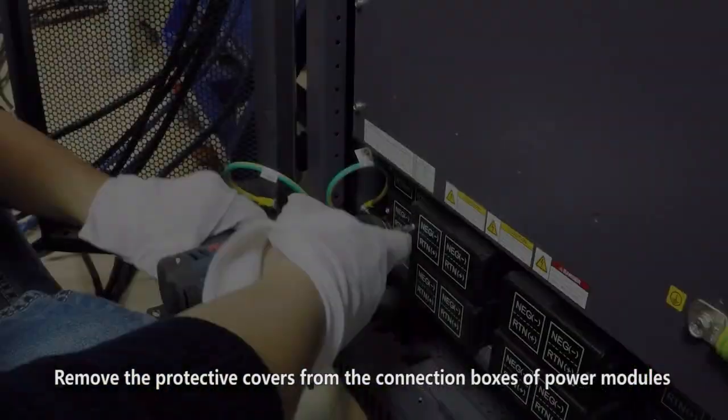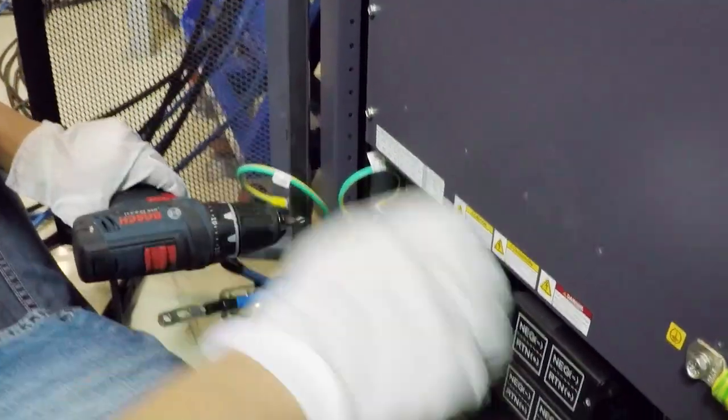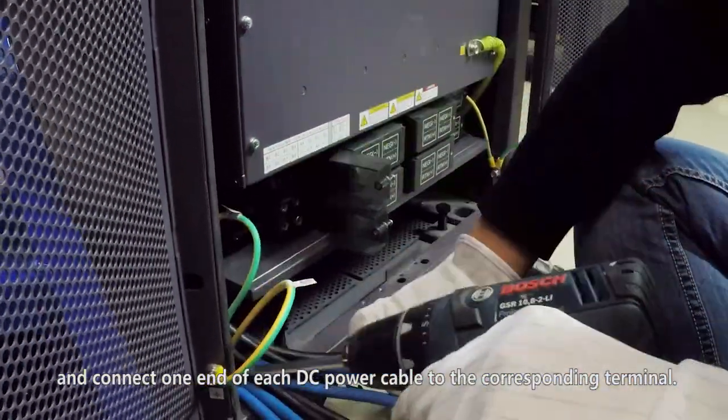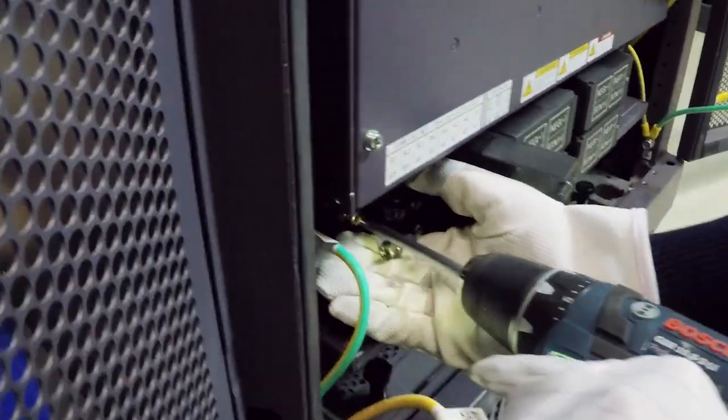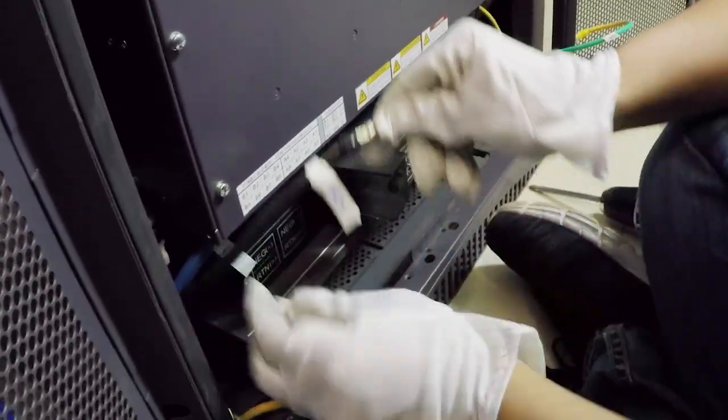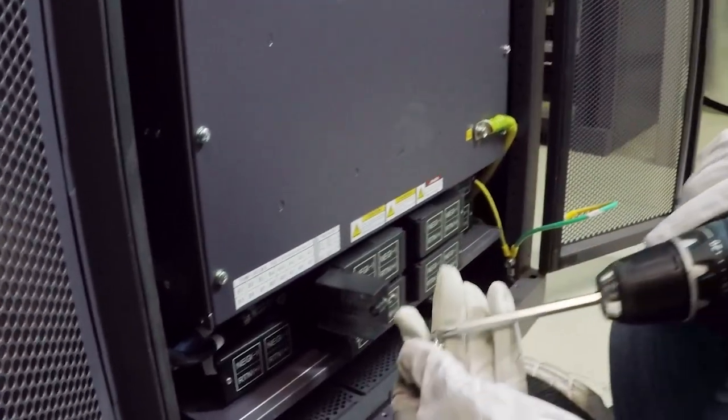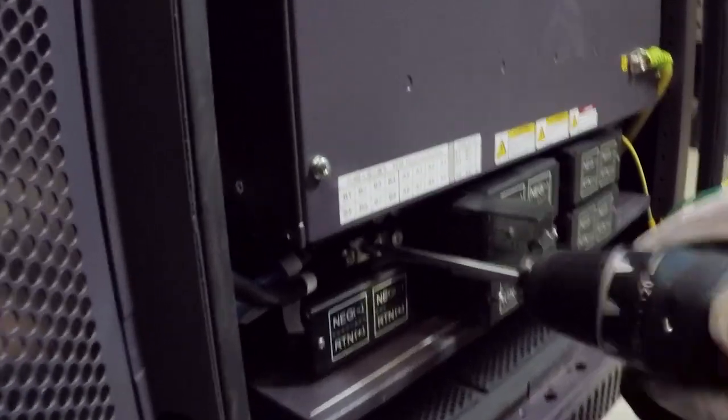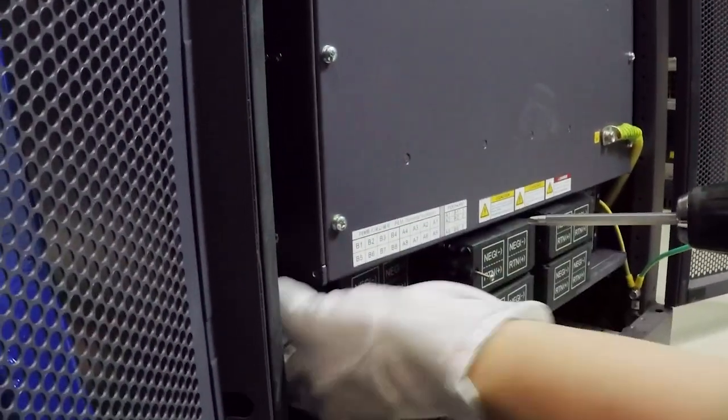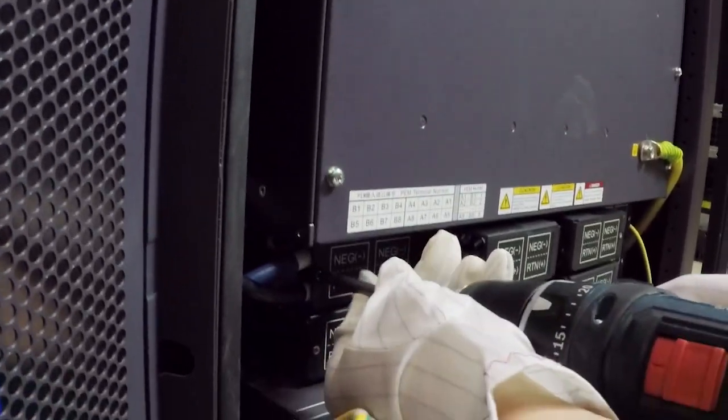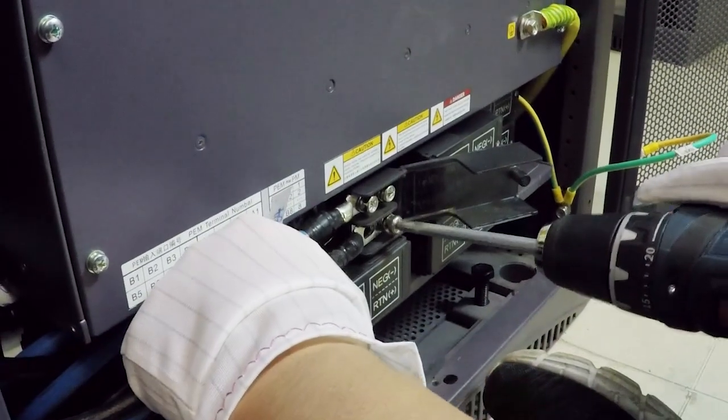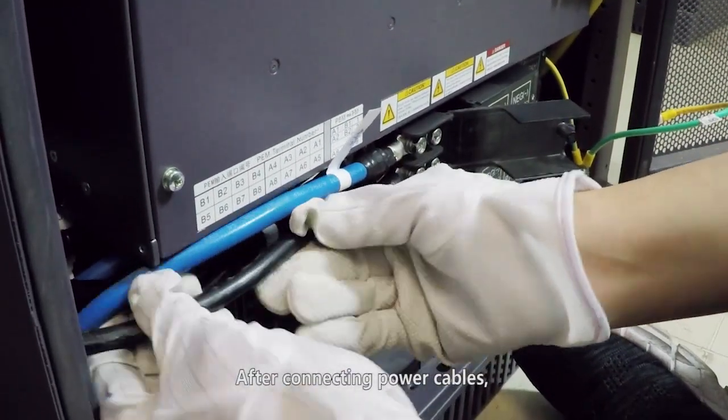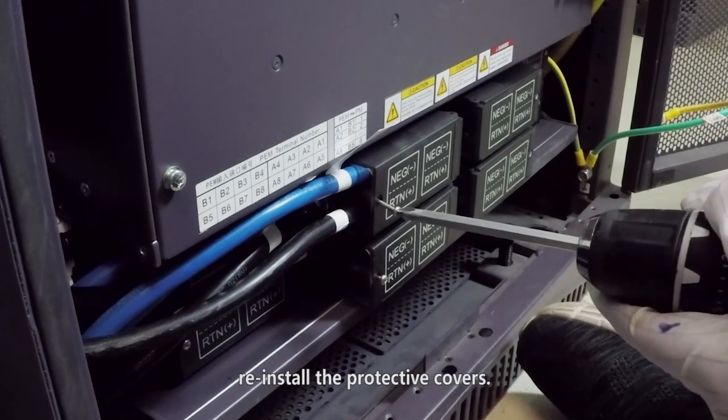Remove the protective covers from the connection boxes of power modules and connect one end of each DC power cable to the corresponding terminal. After connecting power cables, reinstall the protective covers.